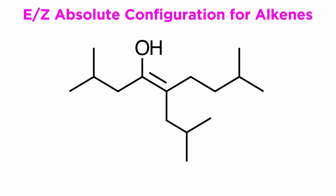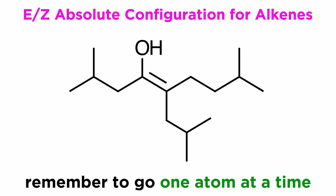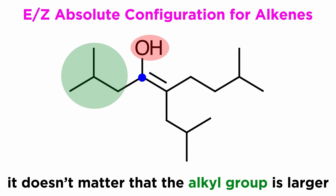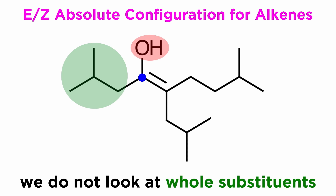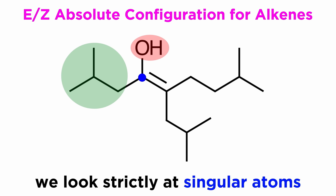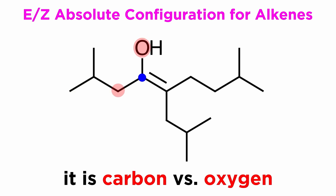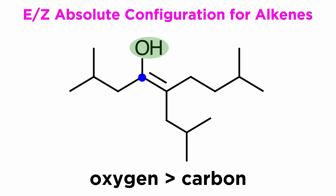Of course, it can seem a little trickier when the molecule is more involved, such as this one, but it isn't really any more complicated if we remember that we simply go one atom at a time. So here, for this left carbon, we have a long carbon chain and we have a hydroxyl group. Avoid the temptation of labeling the carbon chain as the higher priority simply because it is a large group. We are not looking at whole substituents — we are looking strictly at the singular atom connected to the carbon participating in the double bond. So it's not whole big group versus hydroxyl; it is carbon versus oxygen. Oxygen has a greater atomic number, so this group takes priority.